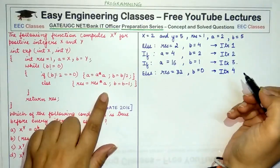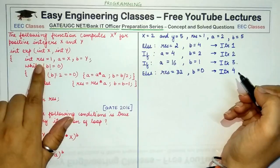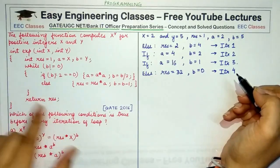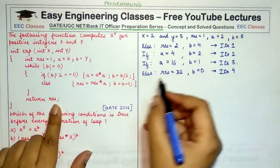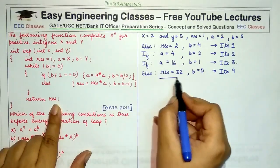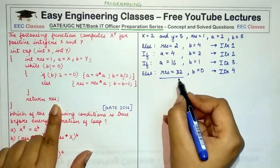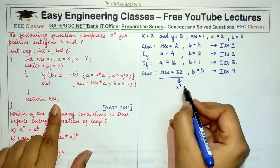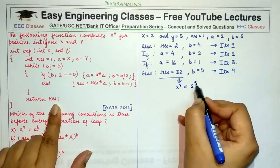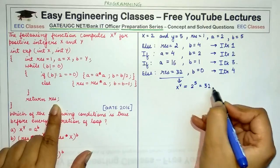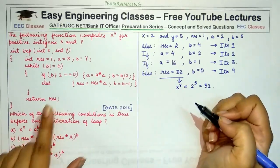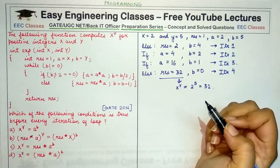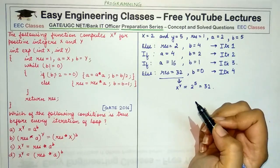Since b's value is now equal to 0, we do not make any further iterations of the while loop and simply return the result. This result is actually x raised to the power y — that is, 2 raised to the power 5 — which equals 32. Now we need to determine which of the four conditions is true before every iteration of the loop.